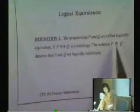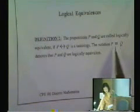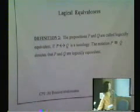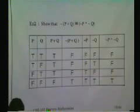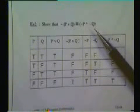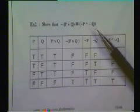We use this notation sign when both P and Q are logically equivalent. In example number two, we can show that not of P or Q is logically equivalent with not P and not Q. How to do that?